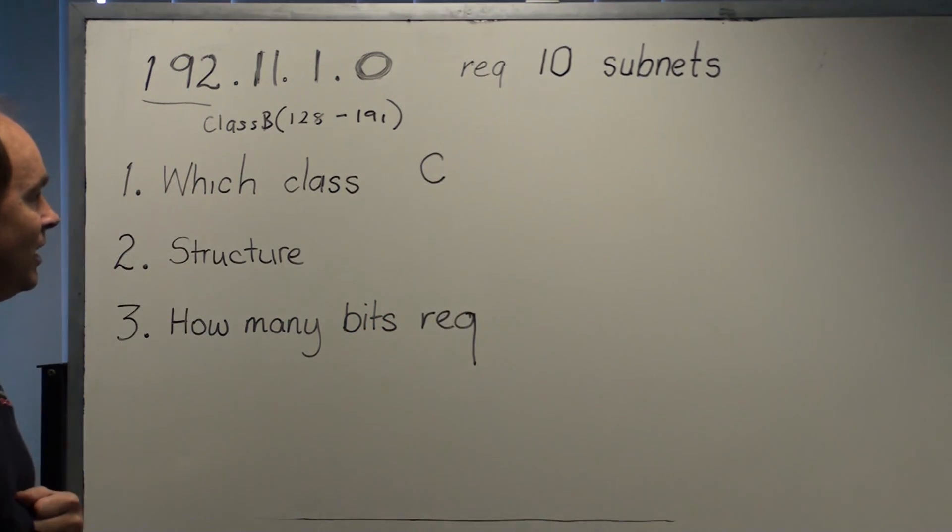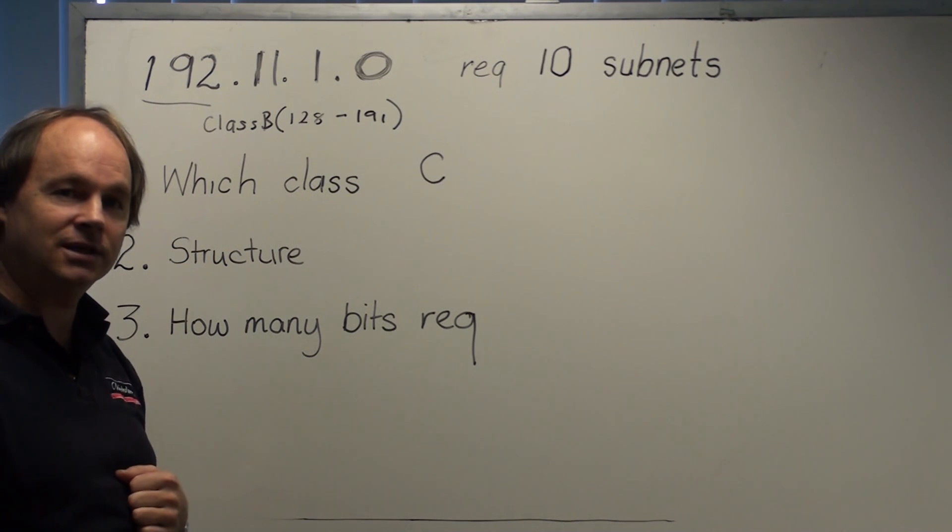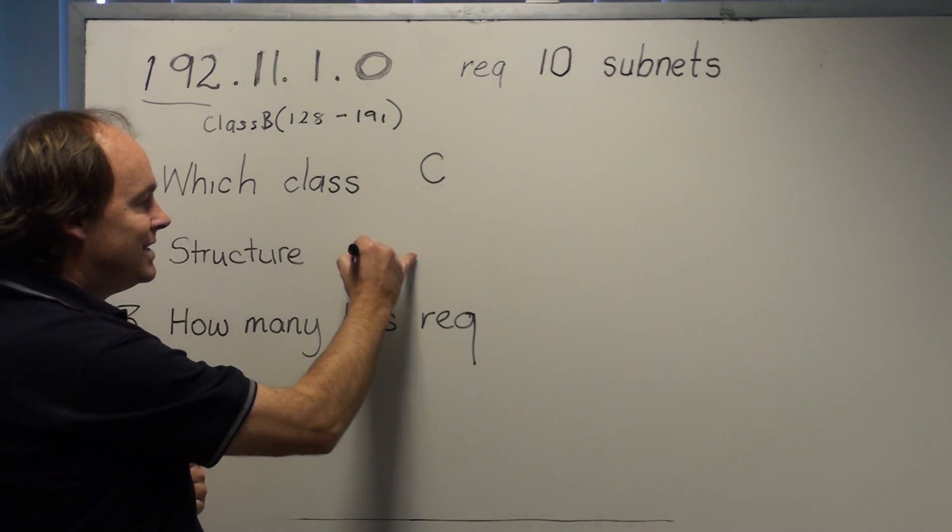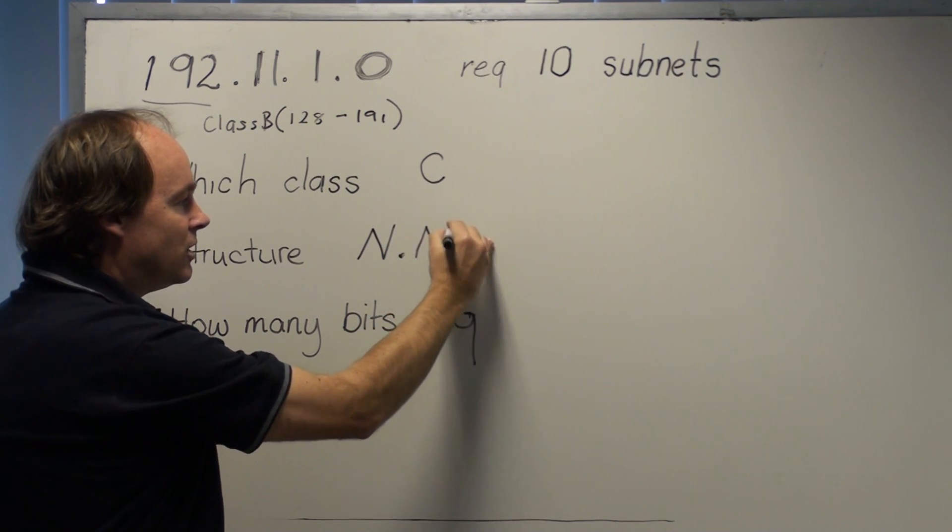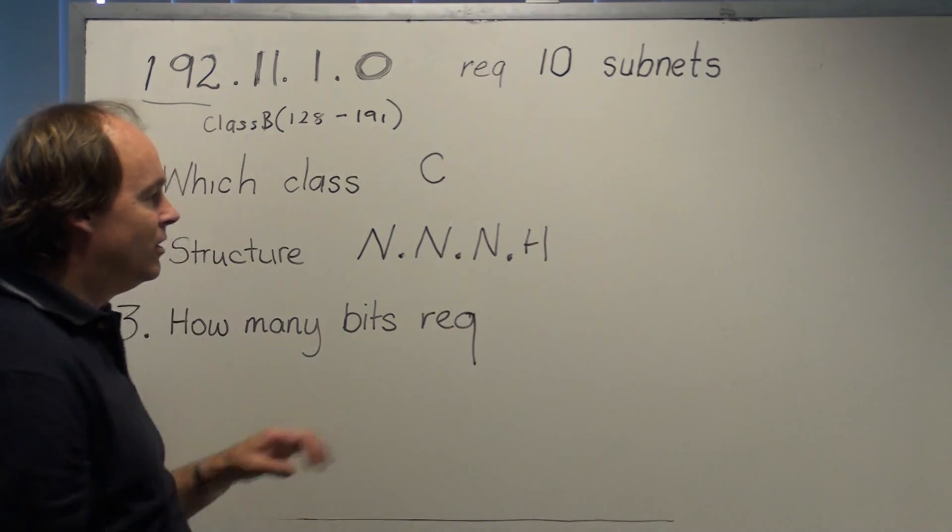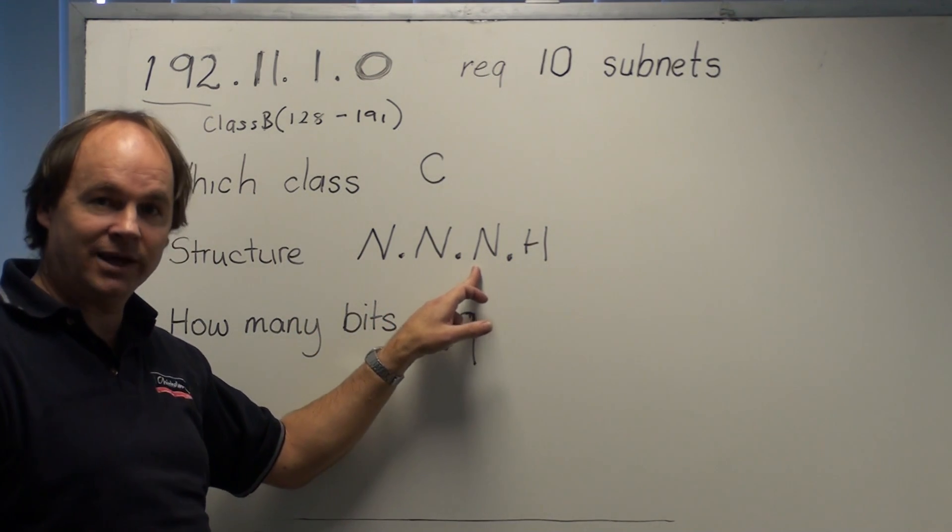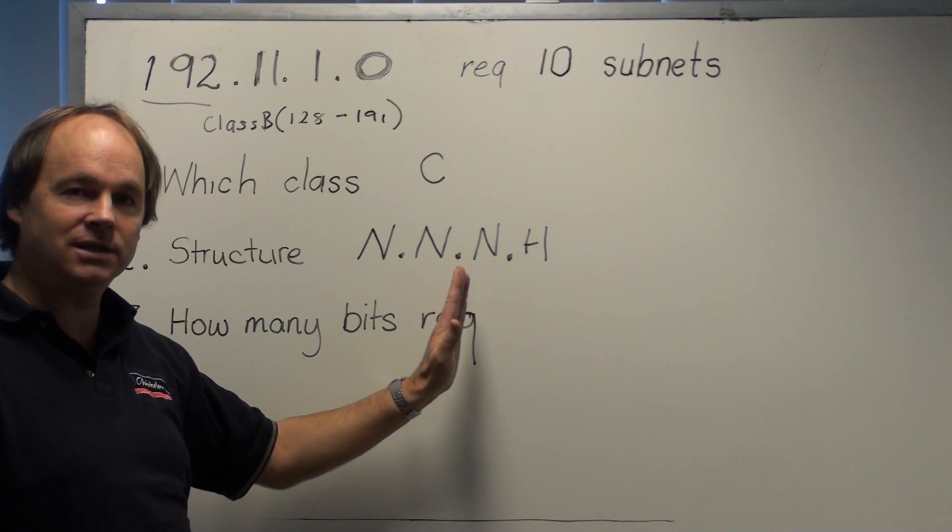So we are clear that it's class C. Knowing that it's class C, we need to remind ourselves of the structure of class C. If you recall class C has a structure as follows: it's a network, network, network, host structure. So the first 3 octets make up the network portion by default, always with class C.